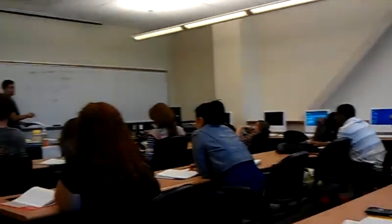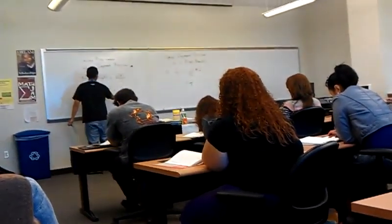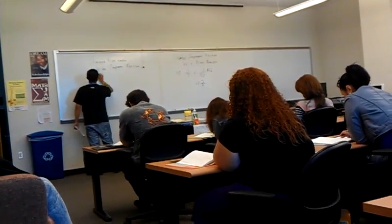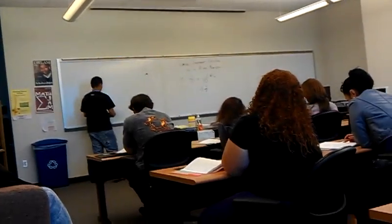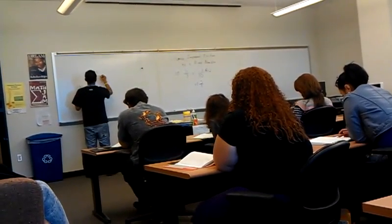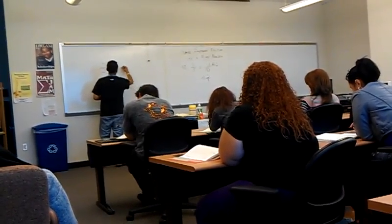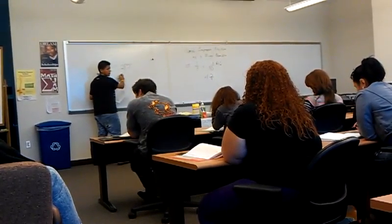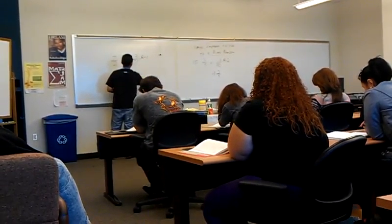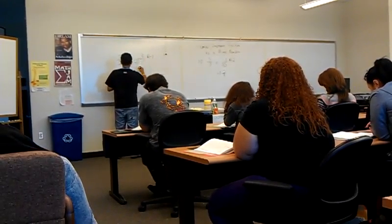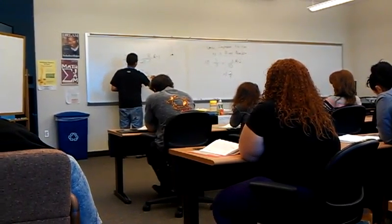Would you like to see another example of this? Alright. 7 over 2 means 7 divided by 2. So 2 goes into 7 three times, and you have 1 left over. So now you write it as: the whole number is 3, your denominator is 2, and your numerator is 1.